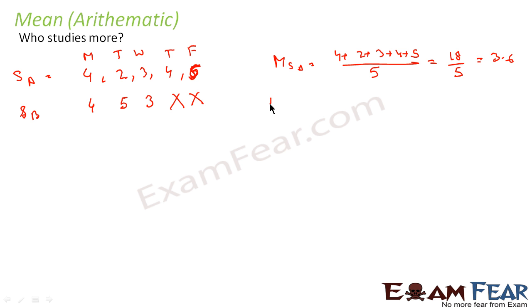For student B, since we have data only for 3 days, the mean will be 4 plus 5 plus 3 divided by 3. This comes out to be 12 by 3, which is 4.